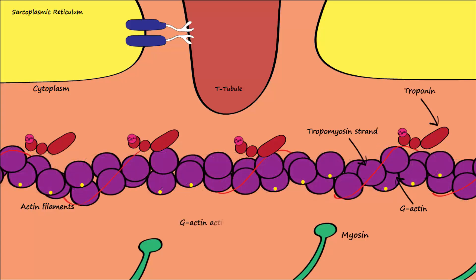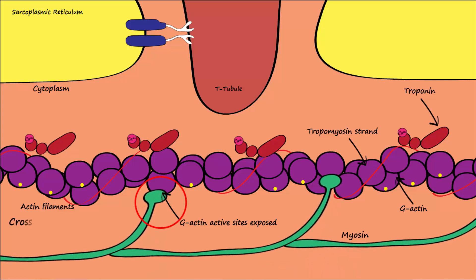This uncovers the G-actin active sites so that myosin can now attach to the actin to form a crossbridge and initiate muscle contraction.